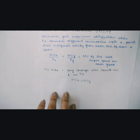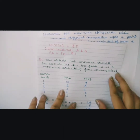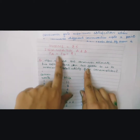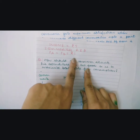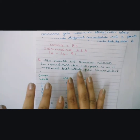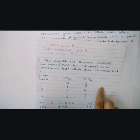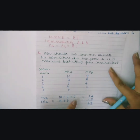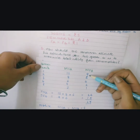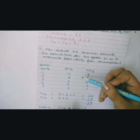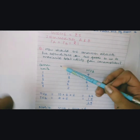Let us take an example. The consumer's income is 5 rupees and he is consuming two commodities, A and B, where the price of commodity A and the price of commodity B are each equal to 1 rupee. The question is: how should the consumer allocate his expenditure on the two goods such that consumer equilibrium is reached and he is maximizing his total utility?